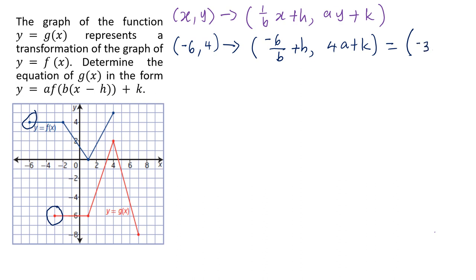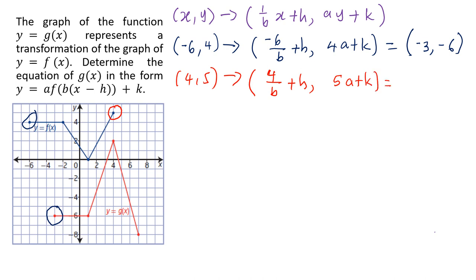If we pick the other endpoint (4, 5), it is being moved to (4/b + h, 5a + k), and this is equal to the image point, which has x-coordinate 7 and y-coordinate -8, giving us (7, -8).